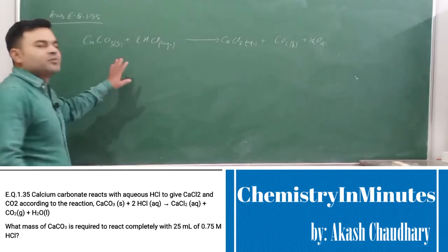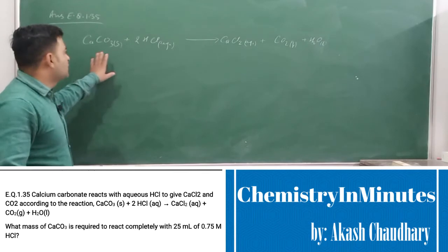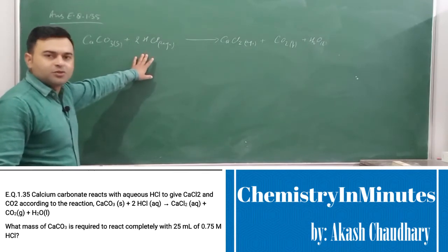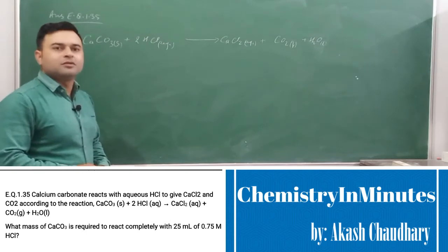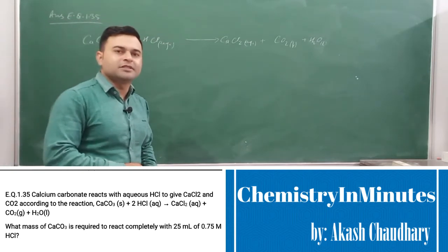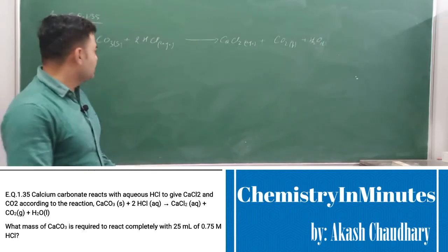So this is our balanced chemical equation and in this we see that 1 mole of calcium carbonate reacts with 2 moles of hydrochloric acid. Given the molarity and volume of HCl, we can find the number of moles of HCl.